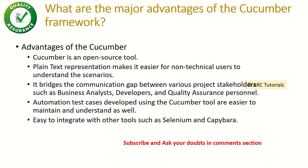What are the major advantages of cucumber framework? First, it's an open source tool — you can easily download and implement it without extra licenses. Second, its plain text representation makes it easier for non-technical people to understand scenarios, helping bridge the gap between business analysts and developers. Third, automation test suites can be easily developed, maintained, and integrated, making it easy for business analysts to collaborate with developers.